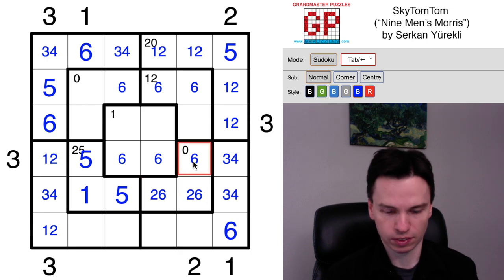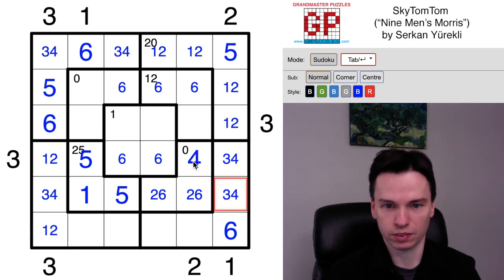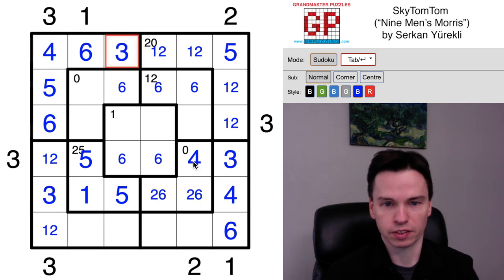Particularly in this fifth row because it now has a pair with the one-five, which means this is two and six. To get to a zero with two and six, this will have to be four, six minus four minus two. Puts in this four, that four, that three, this four, that three.